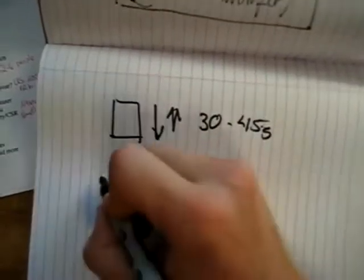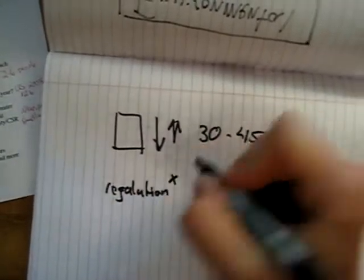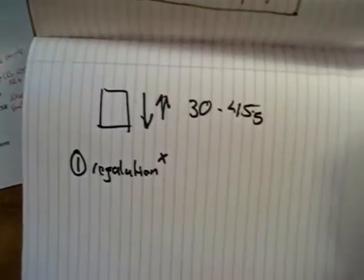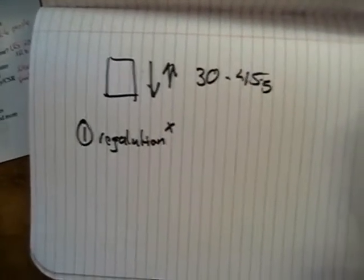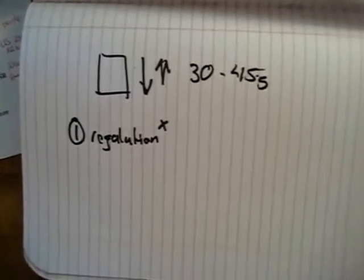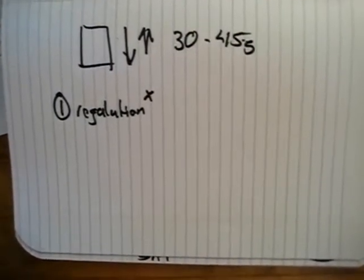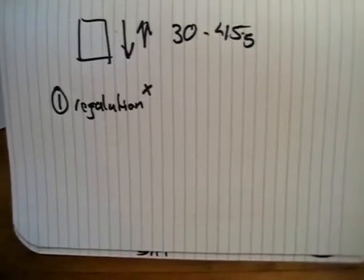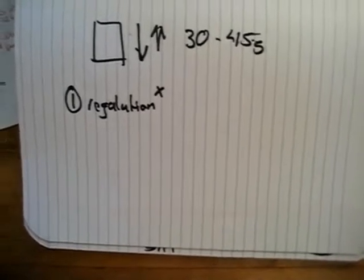First, global regulations are increasing at an exponential rate. This is happening in terms of volume, in terms of number, and also in terms of complexity. Each of these regulations has their own set of requirements for record keeping, monitoring, testing, and reporting. Some of our customers have thousands of permits that result in requirements and tasks that number in the tens of thousands.